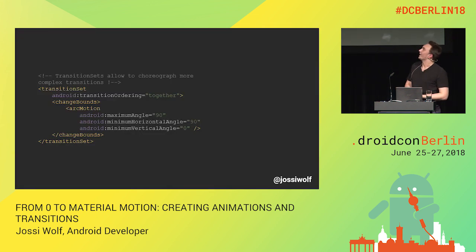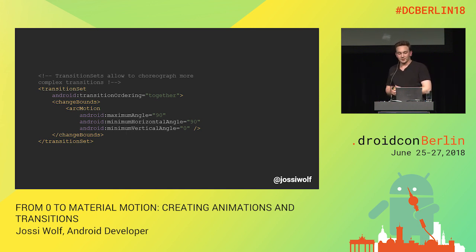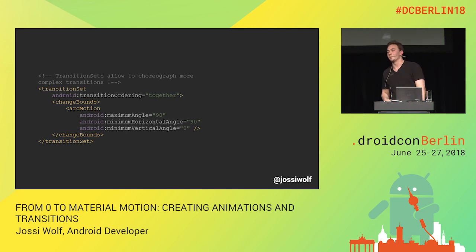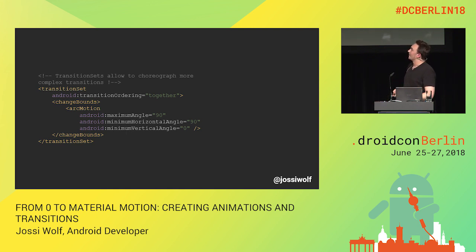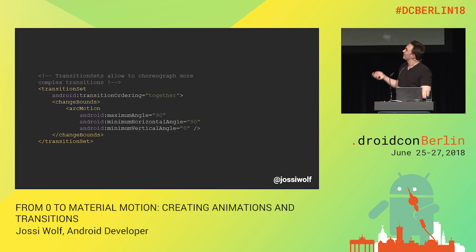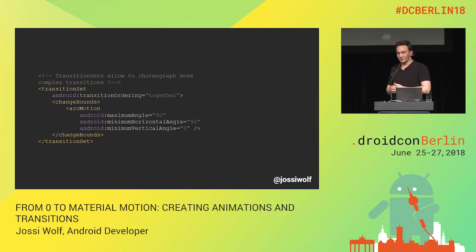Material design also says real-world forces like gravity inspire an element's movement along an arc rather than in a straight line. You may have seen that in the Google Play animation — the element goes along an arc, not a straight line. It gives the user something familiar and makes them feel more welcome. So it's important to add that to your animation, otherwise it loses the benefit of material motion.